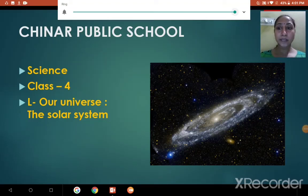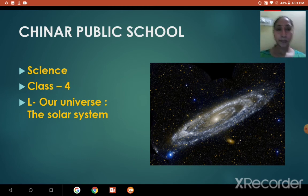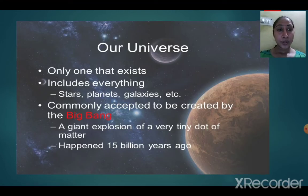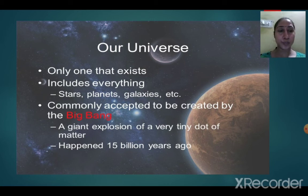Students, today we'll be starting with a new lesson — lesson number nine: our universe, the solar system. Can you imagine the size of the universe? No, you cannot even imagine the size of the universe. It is very vast, very big. Lot of big, enormous things are there in the universe. It consists of stars, galaxies, moons, planets, asteroids, meteoroids, comets — lot of them.